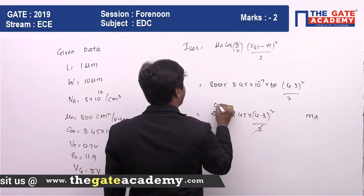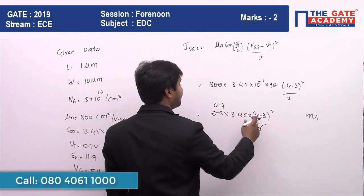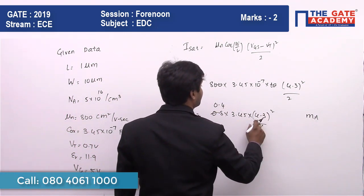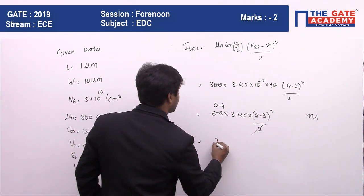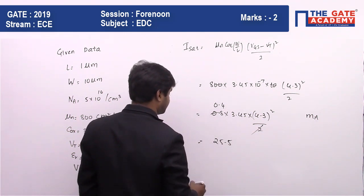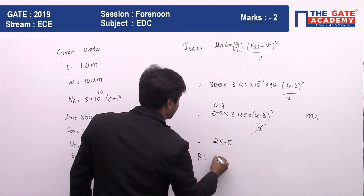So you're going to have 0.4 multiplied by 3.45, 4.3 whole square divided by 2, I mean 4.3 whole square, in milliamperes. So the value will come to 25.5.